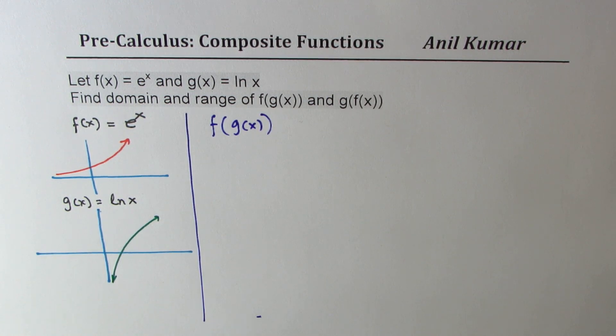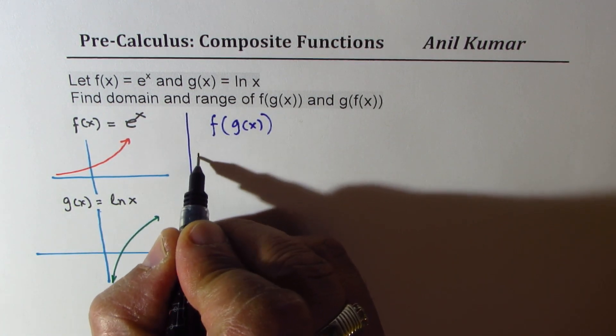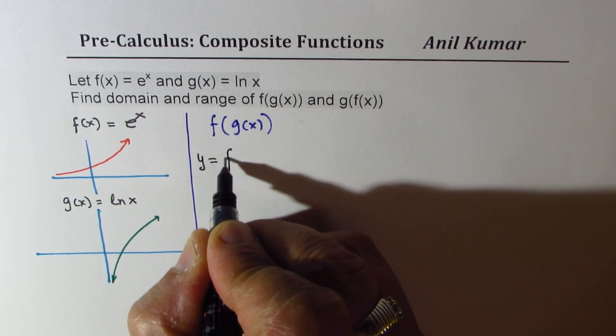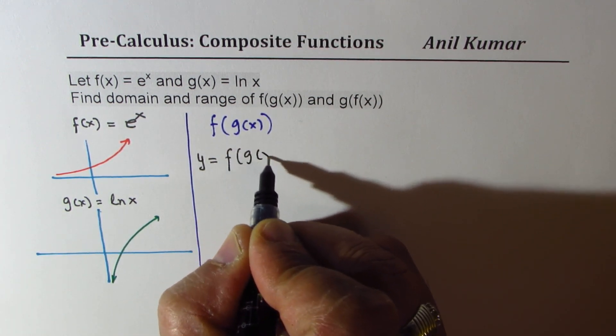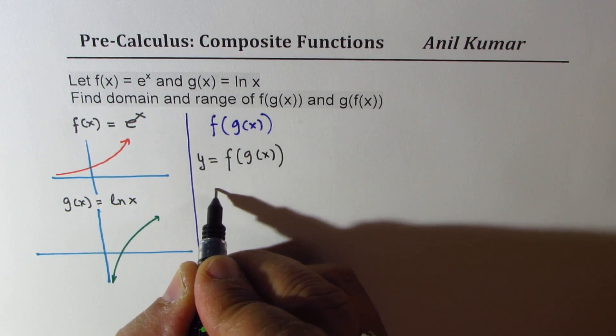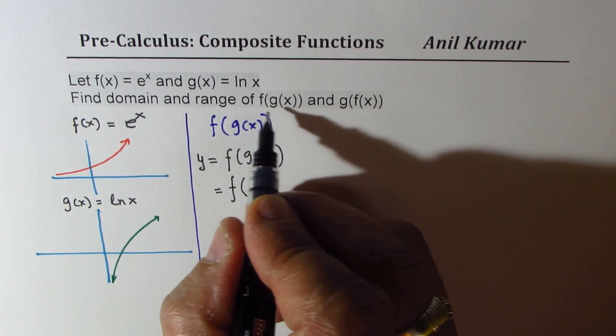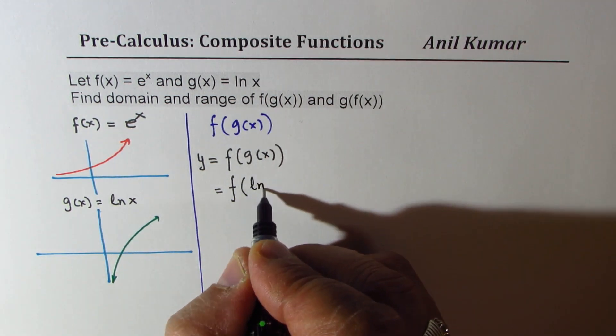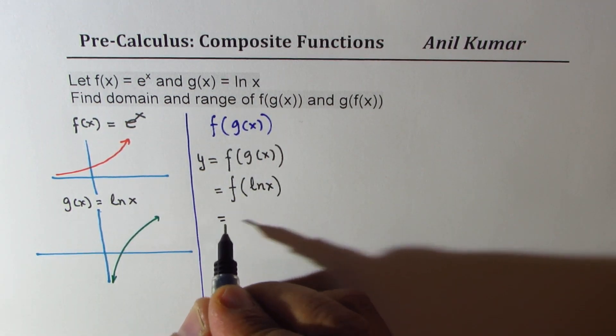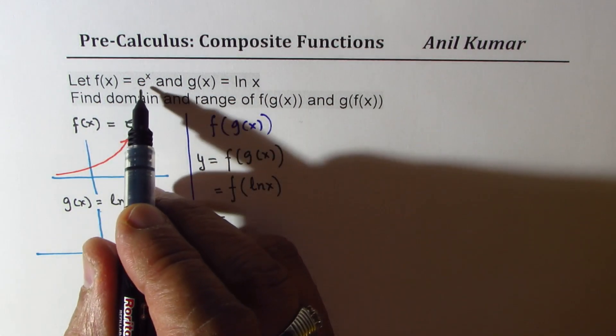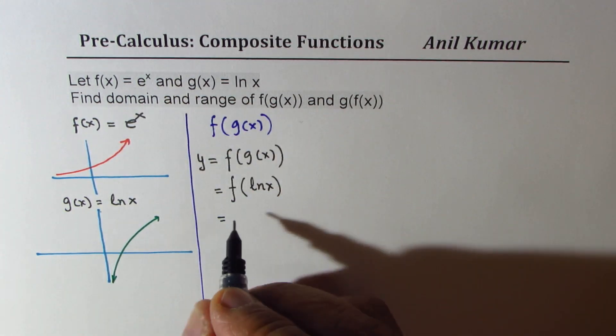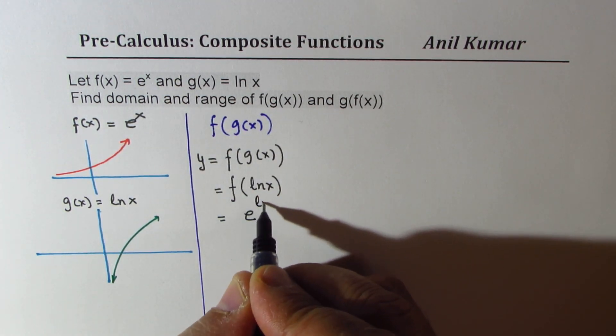First we'll talk about f(g(x)). Let's say y equals f(g(x)). In that case, f of what? g(x) is ln x. Now if I write f(ln x), f(x) is e to the power of x, so x is ln x. I get e to the power of ln x.